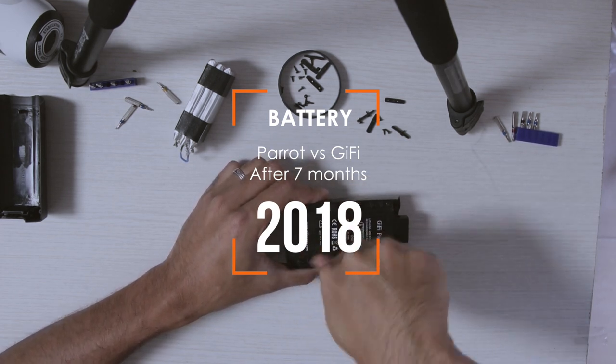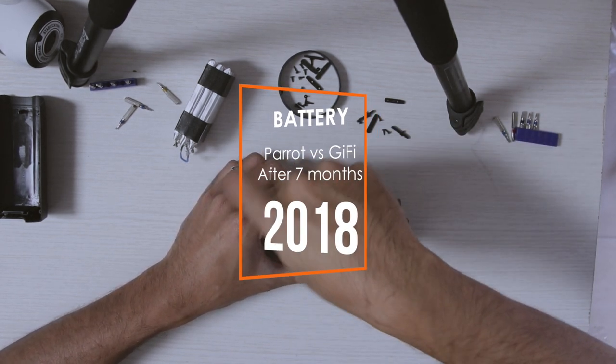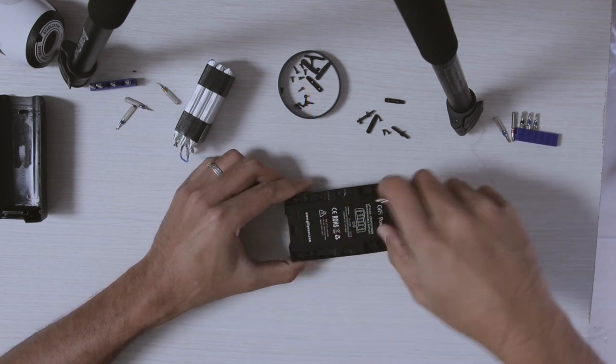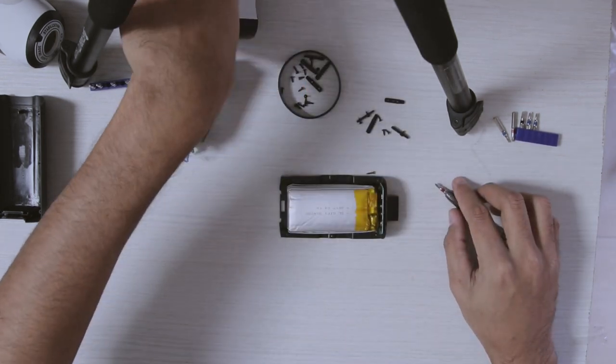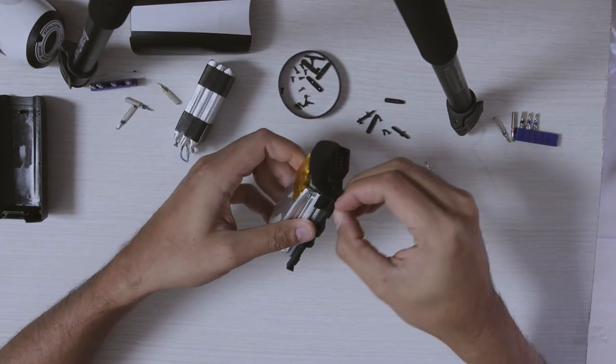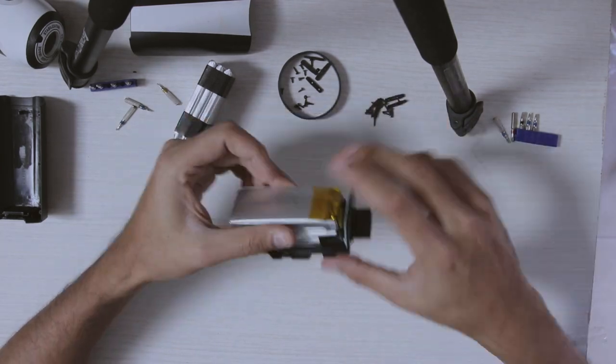I want to show the conditions of the cells after about six to seven months of use. I've tried to use them as evenly as possible, using them both on flights one after the other and then charging them up so I have an even cycle between them for comparison.